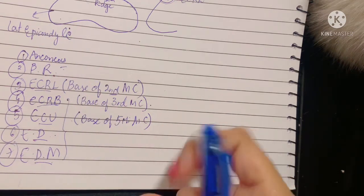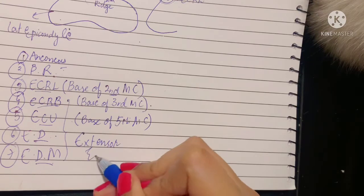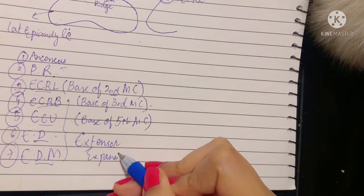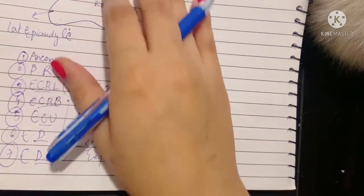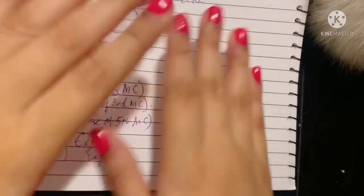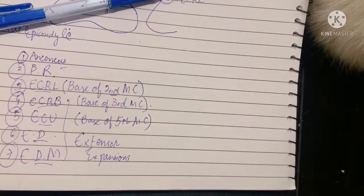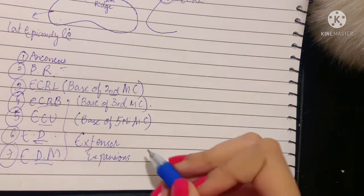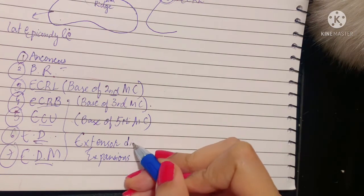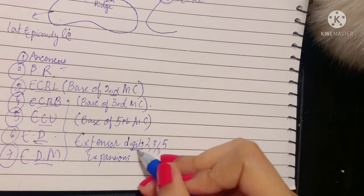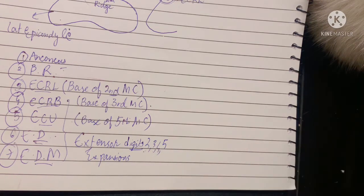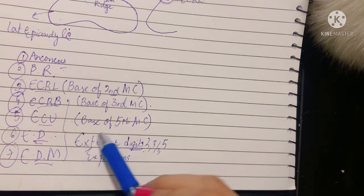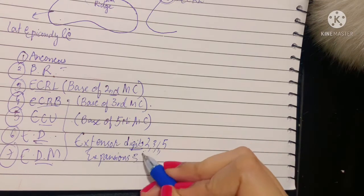The extensor digitorum and extensor digiti minimi are inserted into the extensor expansions. The deep fascia of the hand is modified in the digits to become the extensor expansion, also called the dorsal digital expansion — we will discuss this in more detail later. The extensor digitorum inserts into the dorsal digital expansion of the second through fifth digits, while the extensor digiti minimi inserts into the extensor expansion of the fifth digit only.